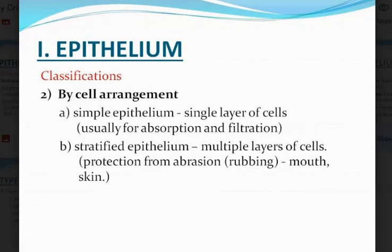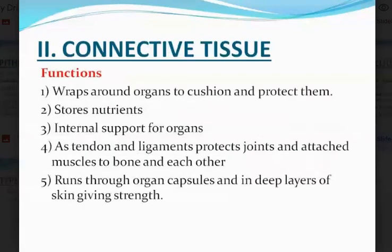In areas where you need rapid absorption or filtration, you have a single layer — simple epithelium. You can have different types of stratified epithelium: stratified squamous, stratified cuboidal, or stratified columnar epithelium. Sometimes the columnar or cuboidal epithelium may have fine hair-like structures on the surface called cilia, which help to move substances on the surface of the cell.